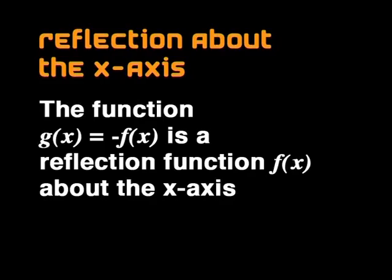We can learn a lot from this. A reflection about the x-axis transforms any function in the same way. Although we develop this expression by studying a specific function using function notation, we can apply this to any function. Let's generalize what we have discovered. The function g of x is a reflection about the x-axis. So g of x equals minus f of x.